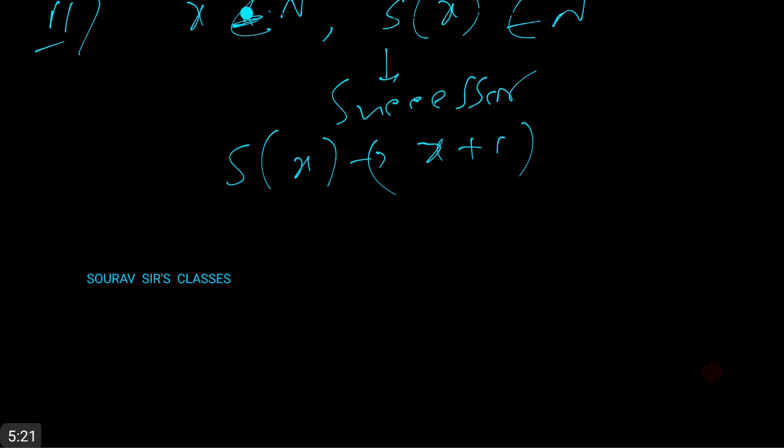For example, in the natural number set we have added zero previously, so S(0) we can take it as one. Now the rest of the axioms we will be doing in our next video.